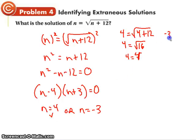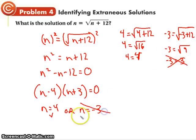Then we do the three. The negative three is equal to the square root of negative three plus twelve. Negative three is equal to the square root of nine. Problem. Not true. The square root of nine is three. Three does not equal negative three. So this is an extraneous solution.